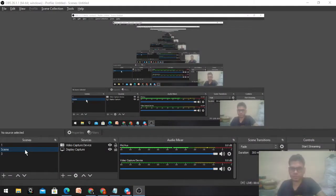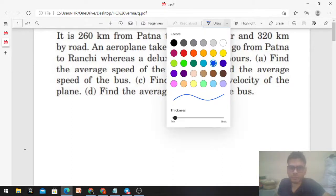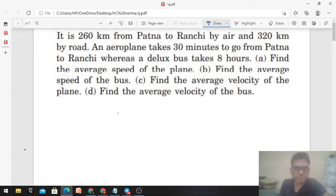Okay, hi everyone. So today we will discuss this simple but interesting problem from H.C. Verma. It is 260 km from Patna to Ranchi by air and 320 km by road. So here you have Patna and here is Ranchi. The plane generally moves straight because there are no obstacles in air.